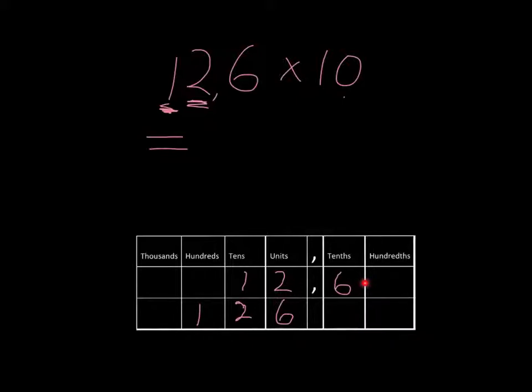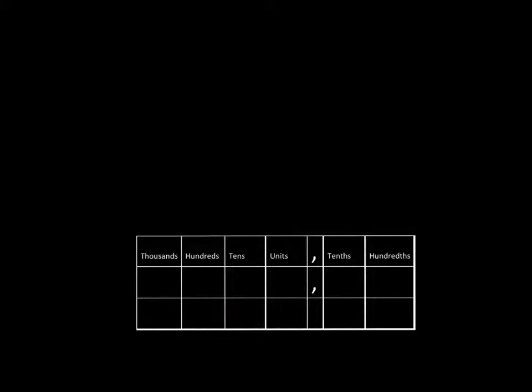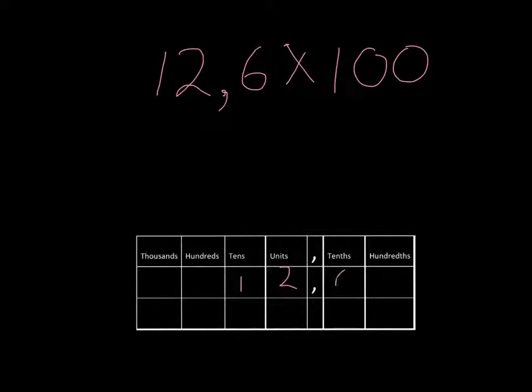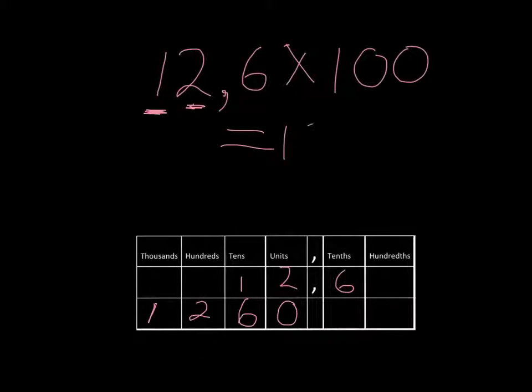One more example just to consolidate the ideas. What if we decided to do 12 comma 6 times by 100? Well, we've got 12 comma 6. We saw previously that when we multiplied this comma 6 by 100, it moved all the way up to the tens. If we multiply 2 units by 100, they will become 200. And if we multiply 10 by 100, they will become thousands. We must put in the zero place marker here and our answer is 1,260.